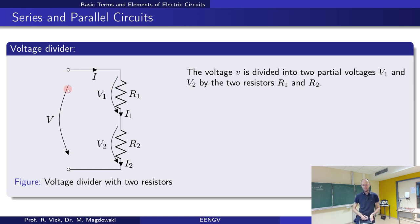What is given: we know the two resistors, we know the total voltage, and we want to find the partial voltage V1 or the partial voltage V2. So how could you calculate them with what you have learned so far?